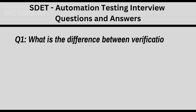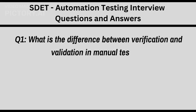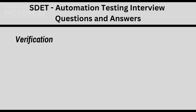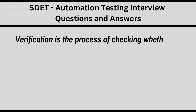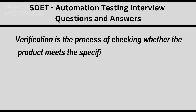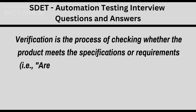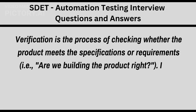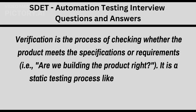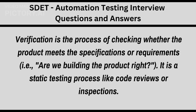Q1: What is the difference between verification and validation in manual testing? Verification is the process of checking whether the product meets the specifications or requirements — i.e., are we building the product right? It is a static testing process like code reviews or inspections.